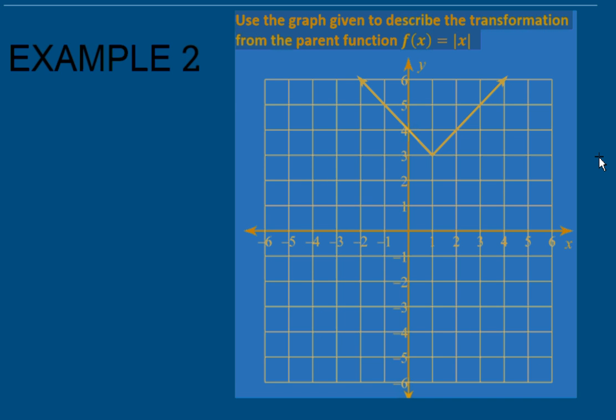In example 2, it wants us to describe the transformation from the parent function f of x equals x. You have to remember that f of x equals the absolute value of x. That's this graph right here.